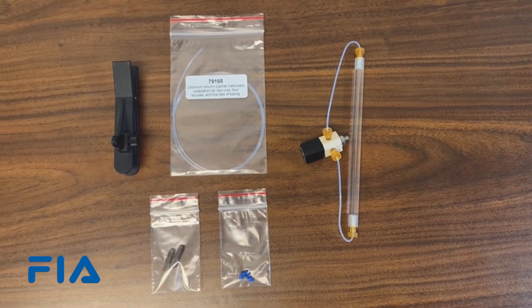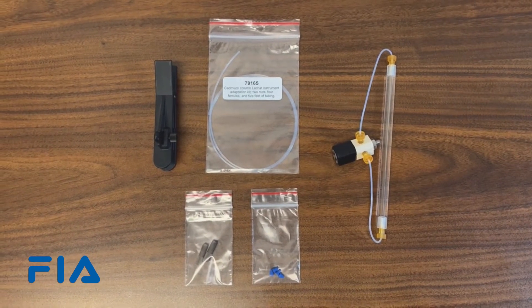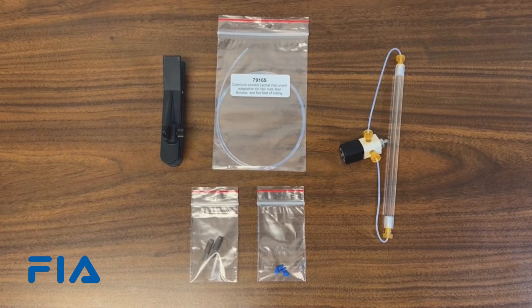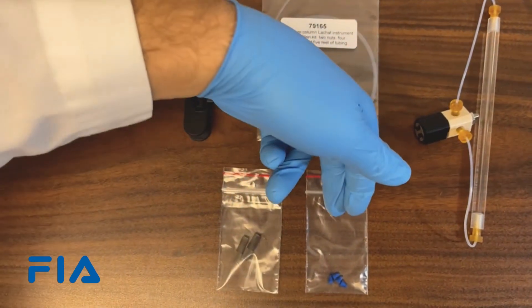To attach a Pheolab column to a Latchet instrument, you'll want to make sure you have an adaptation kit from Pheolab. That includes tubing, nuts, and ferrules.